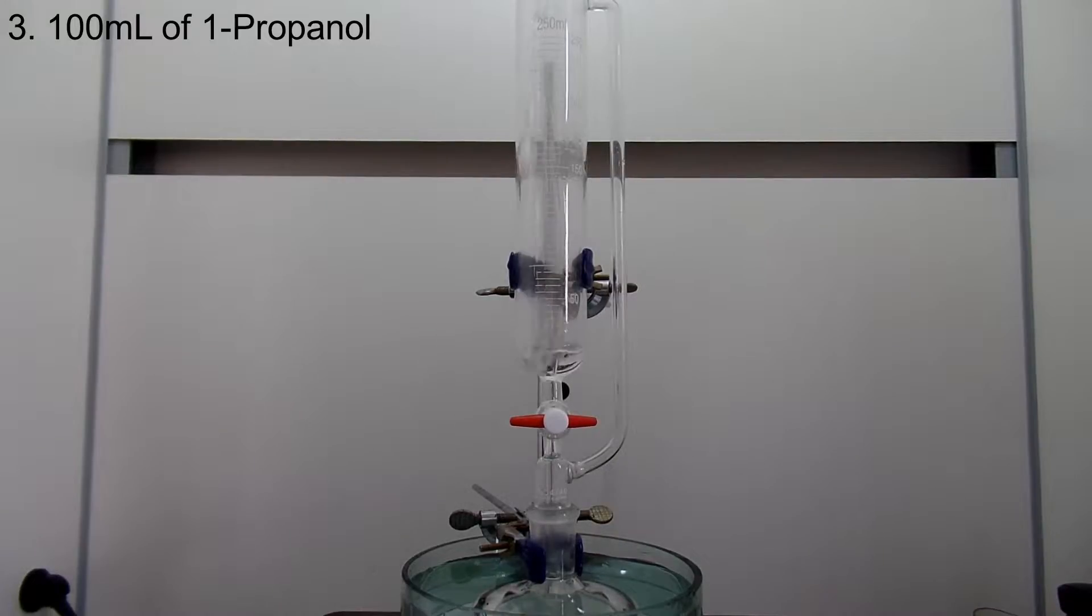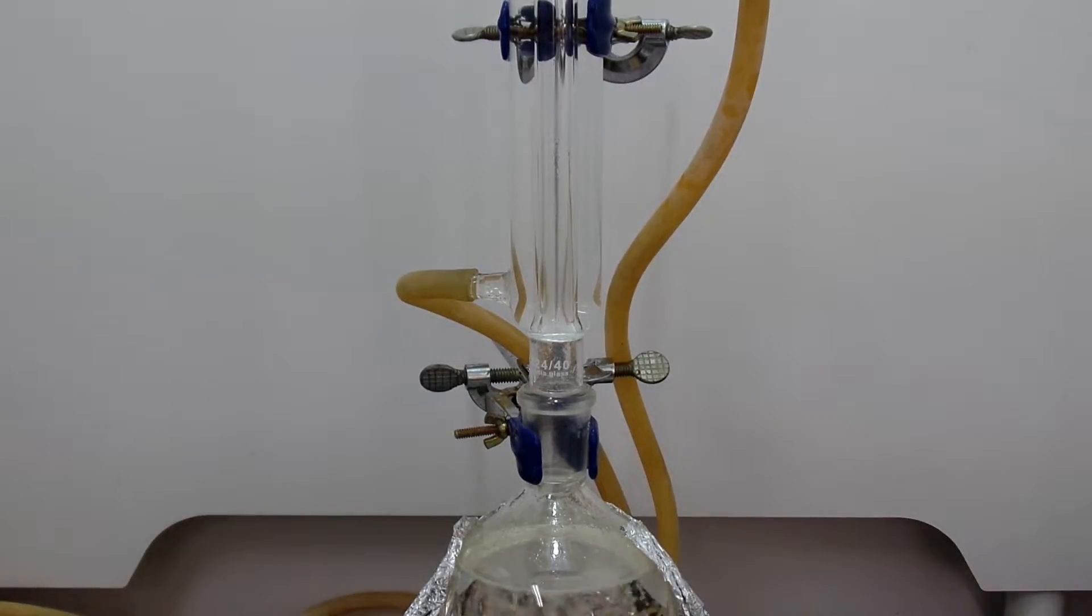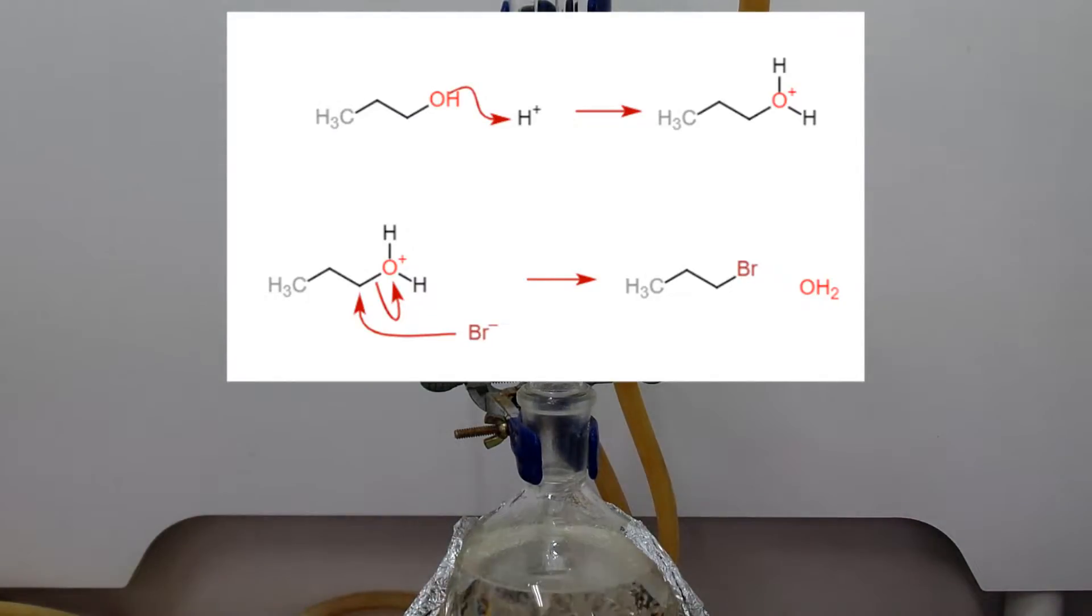After all the addition, add one propanol into the addition funnel and add it drop-wise. After all the addition, set up a reflux and the whole mixture is boiled for two hours. What we are doing here is we are brominating the alkyl group of the OH group of the one propanol. The reaction is shown above.